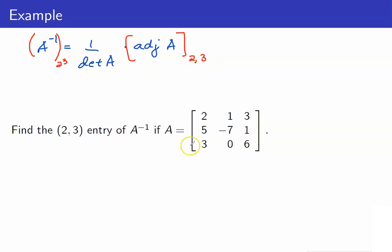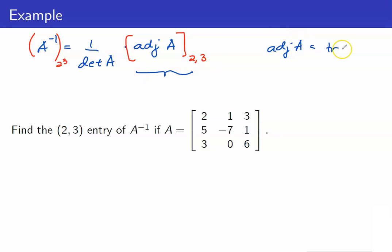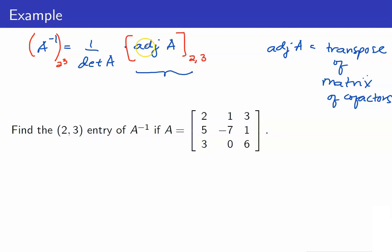What is the (2,3) entry of the adjoint of A? Recall that the adjoint of A is the transpose of the matrix of cofactors. Therefore, the (2,3) entry of the adjoint of A is the (3,2) entry of the matrix of cofactors, which is exactly C_3-2.